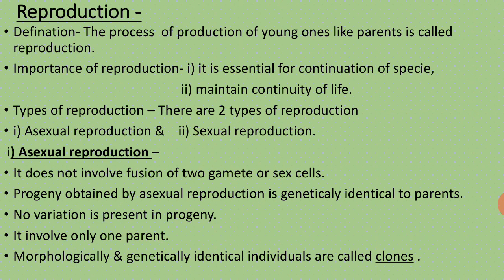The progeny from asexual reproduction is 100% similar to the parents — the genetic material and the information stored in it is exactly similar to the parent. Their structure and every character is 100% similar to their parents. No variations are present in the progeny. It involves only one parent — in the asexual method there is no need for two types of gametes, so there is no need for two parents. Only one parent is needed and asexual reproduction is completed.